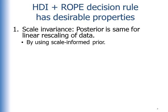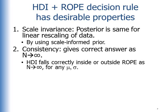It has scale invariance, which means the posterior is the same for linear rescaling of the data. This is achieved by using a scale and form prior — that is, the prior knows whether we're measuring on nanometers or light years. Consistency means that the decision rule gives the correct answer as the sample size n approaches infinity. This happens because the HDI falls correctly inside or outside the rope as n goes to infinity for any true value of the parameters.